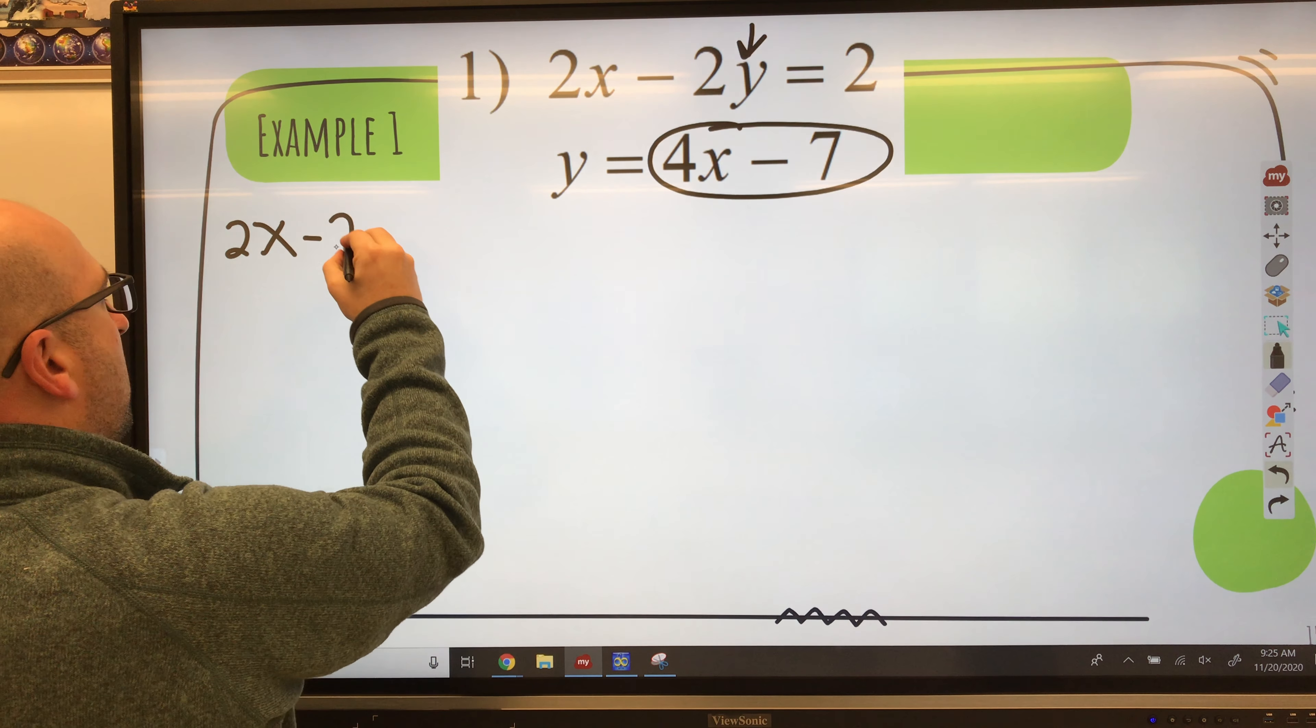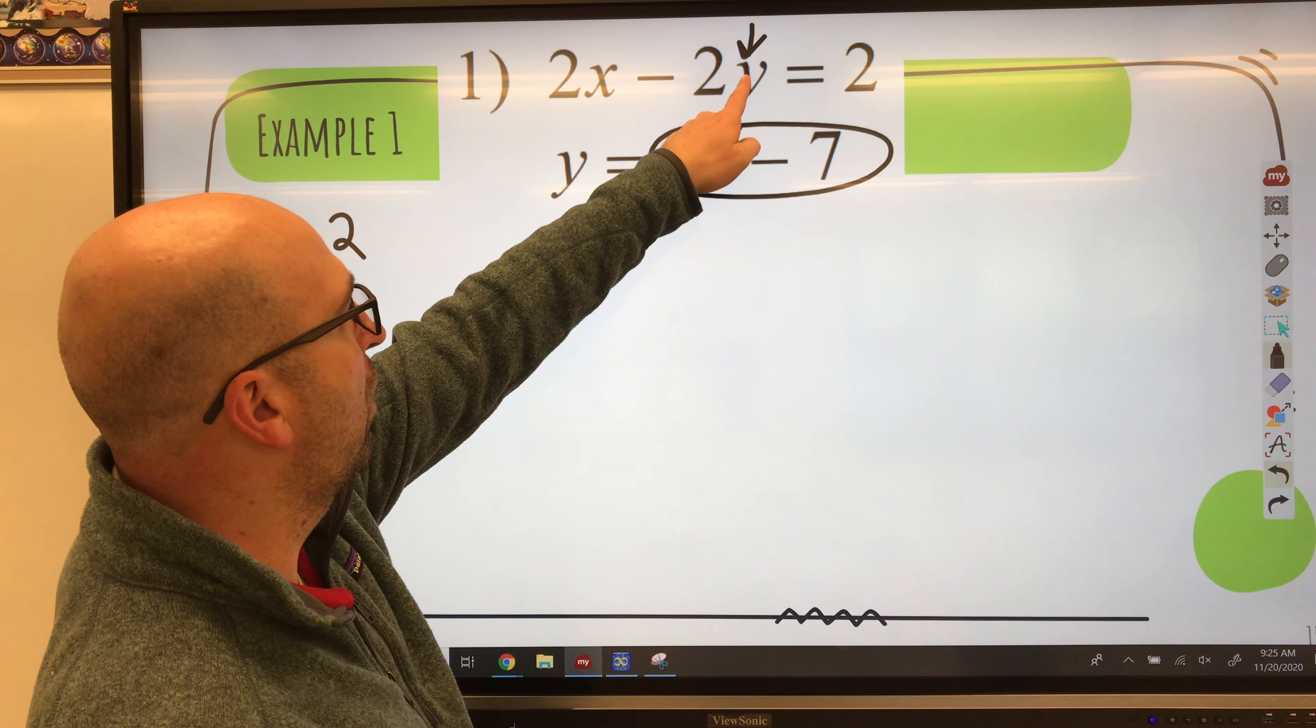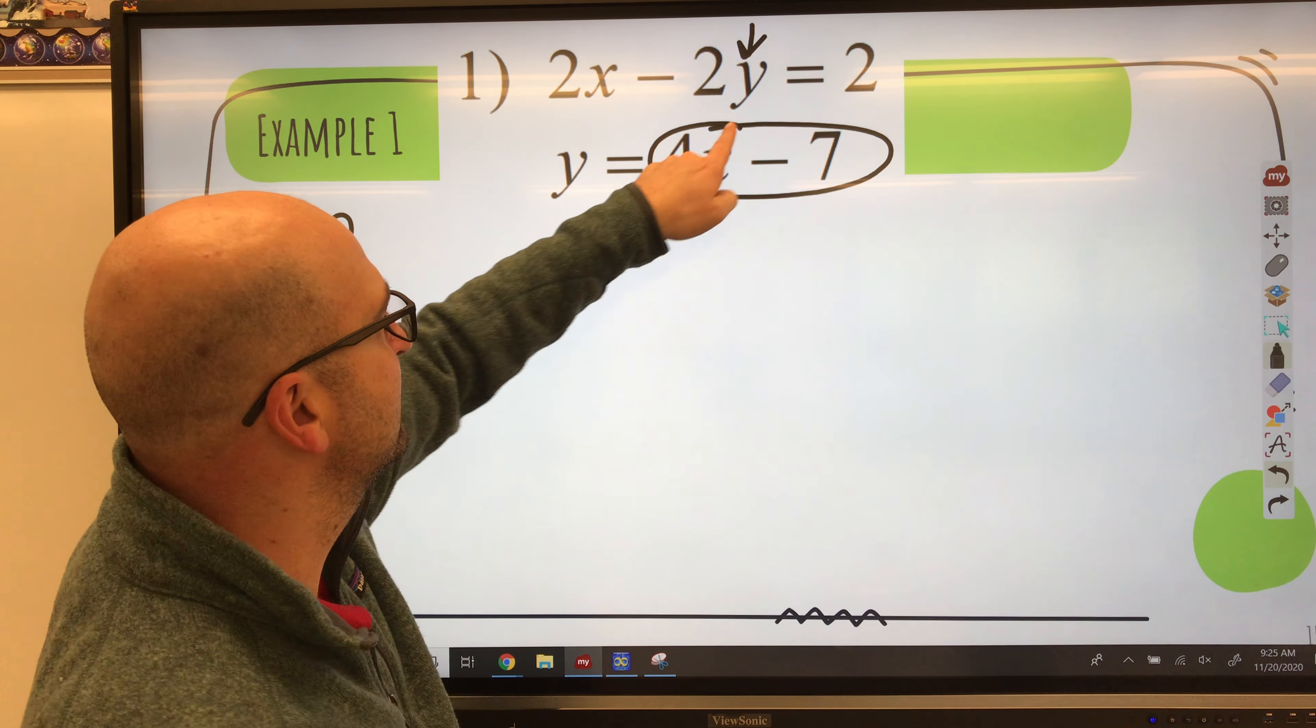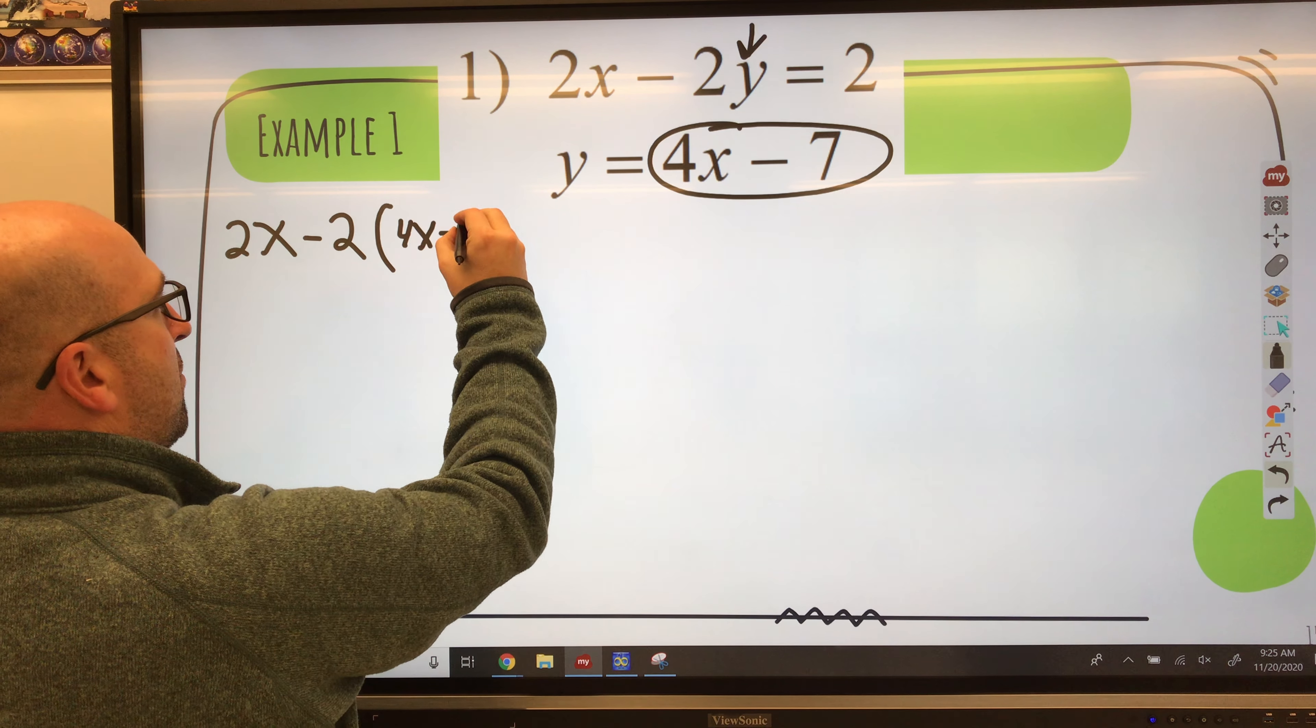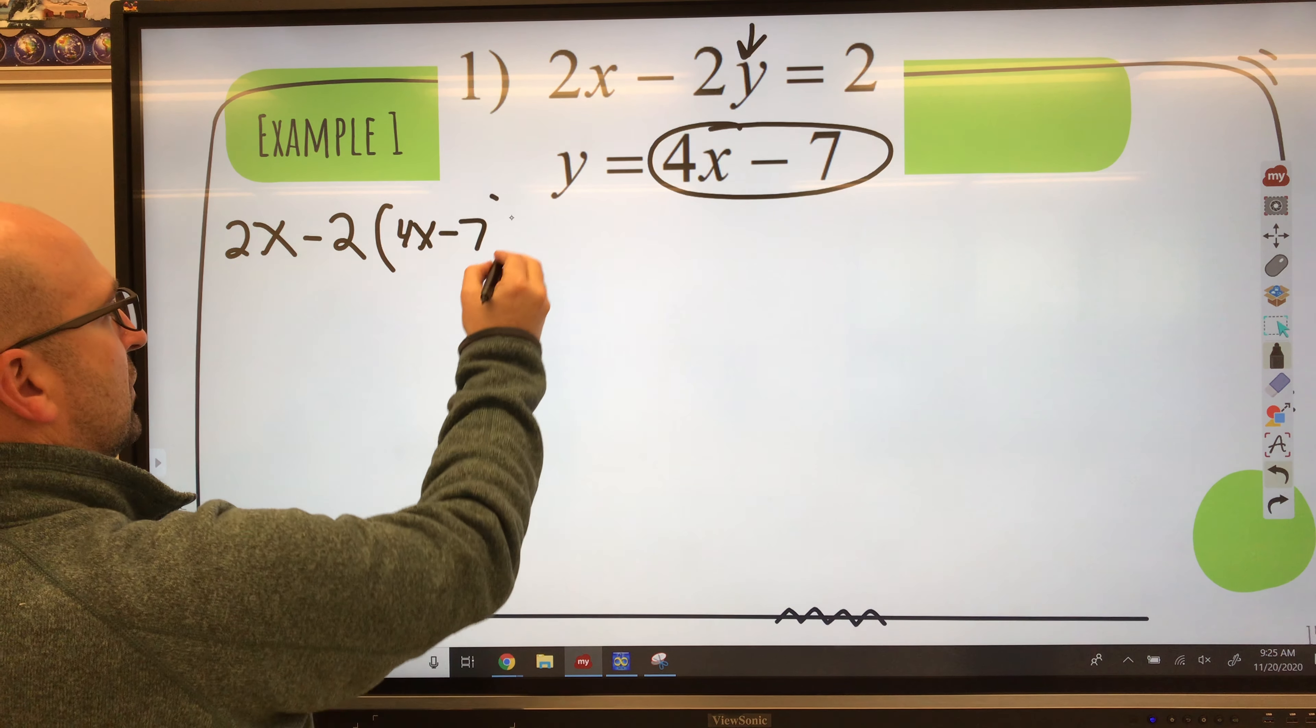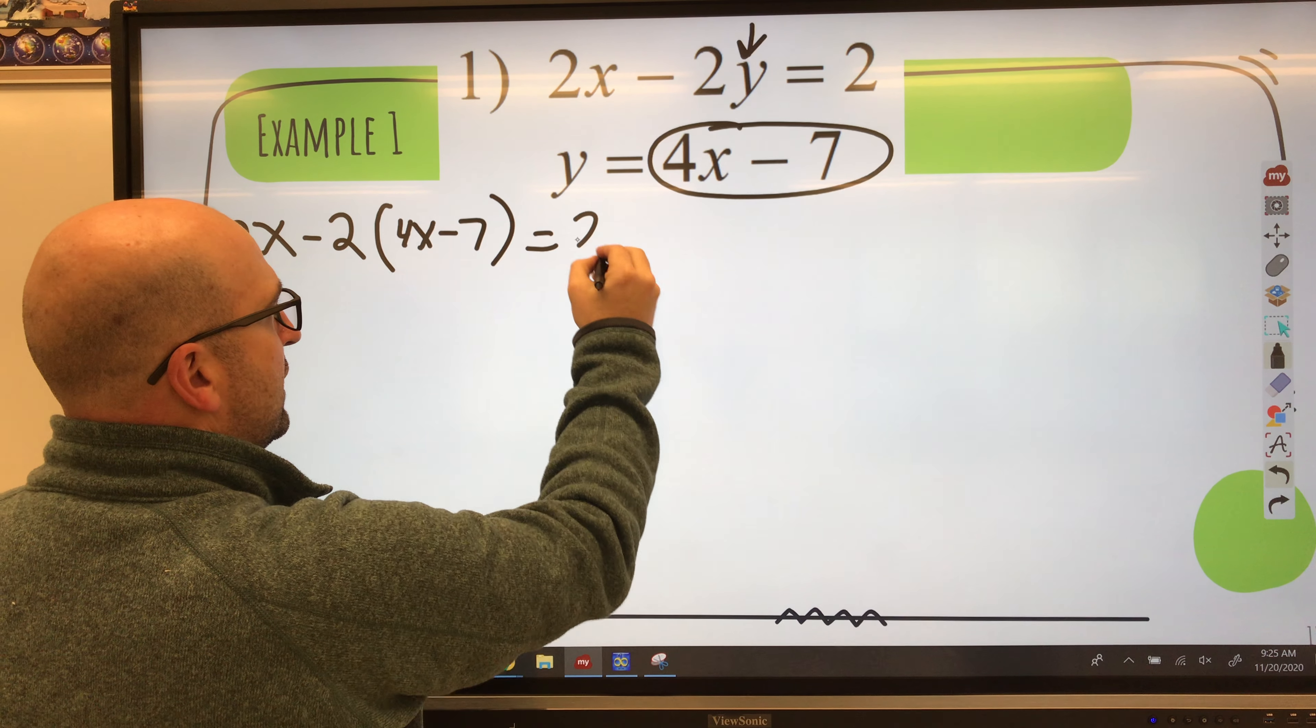So I have 2x minus 2. Instead of y, I'm substituting this. What y is equal for? Parenthesis 4x minus 7. Close parentheses. Equals 2.